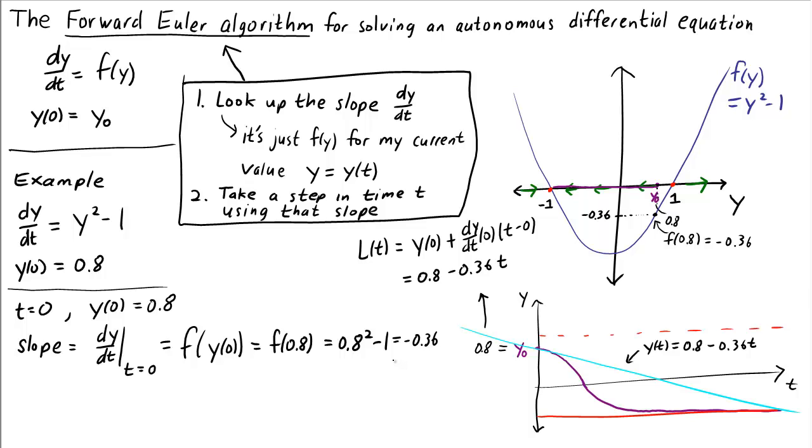And that's the idea of the forward Euler algorithm. We take a step in the direction determined by that slope. And if we want our approximation to be accurate, we should take a small step before looking up a new slope. And that's the question we have to answer: How far should we go along this initial line? The distance we go on each step is a parameter of the forward Euler algorithm. We have to choose the time step, which we'll denote by Δt for change in time. How much do we let time change before we look up a new slope?